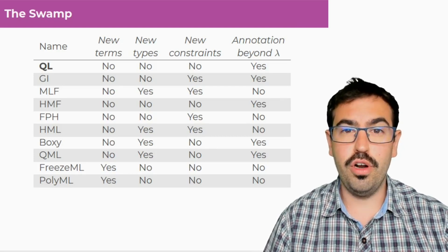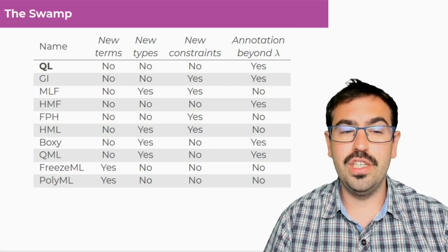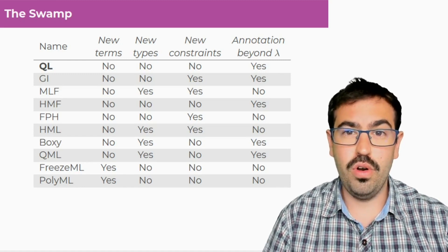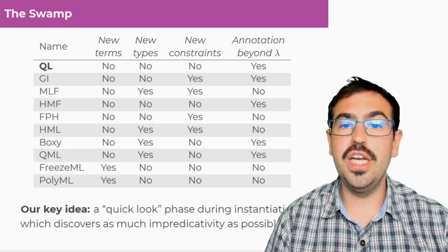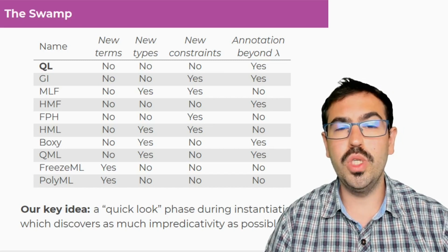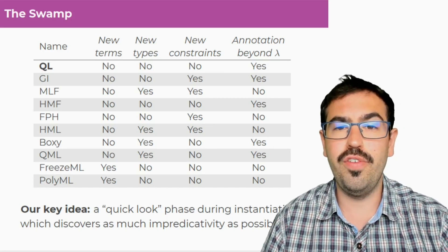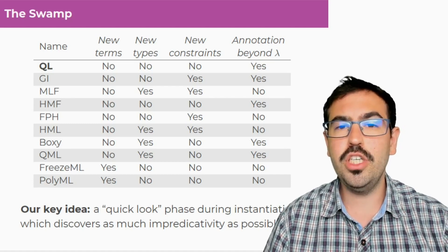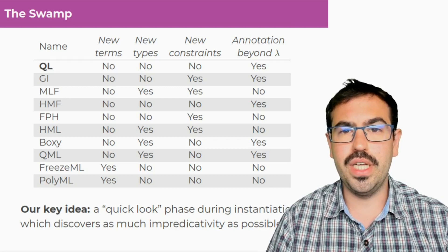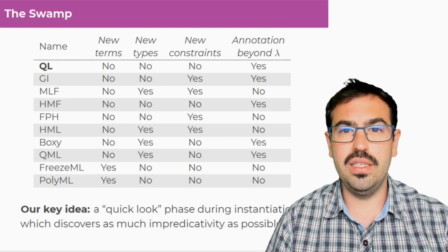There's been a lot of work about impredicative inference. There are so many related works. Here, I want to present quick look, which is a new idea in which we introduce a new quick look phase during instantiation which discovers impredicativity as much as possible, and then the rest of the type checking just remains as it was.